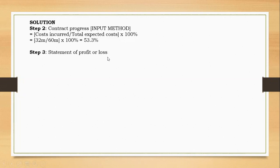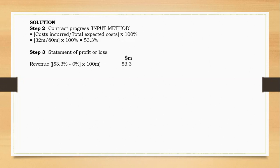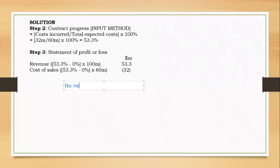Step 3 is the statement of profit or loss. Under IFRS 15, do not waste time using the percentage to determine cost of sales — use the percentage only for revenue. For revenue: we have completed 53.3 percent, there was nothing at the beginning of the year, so 53.3 percent minus zero, multiplied by the contract price of 100 million, gives revenue of 53.3 million. For cost of sales, do not use the percentage.